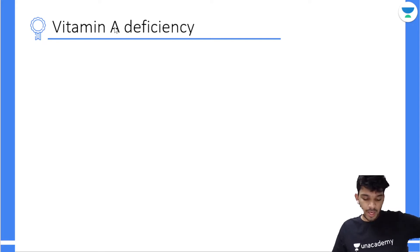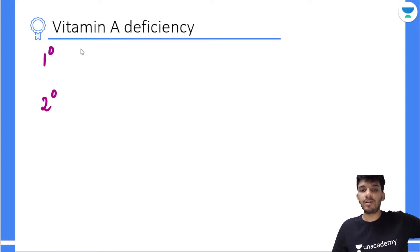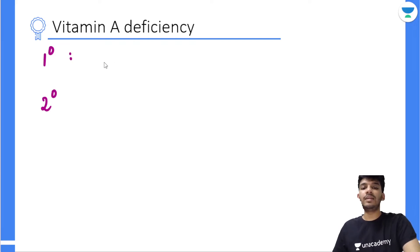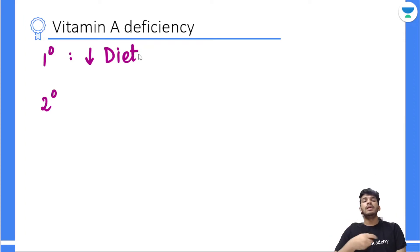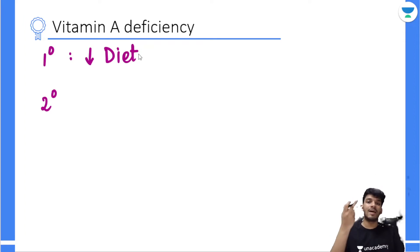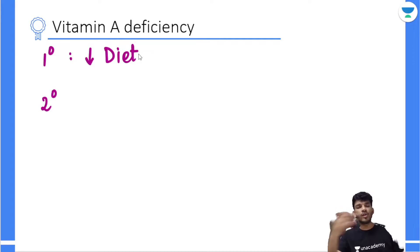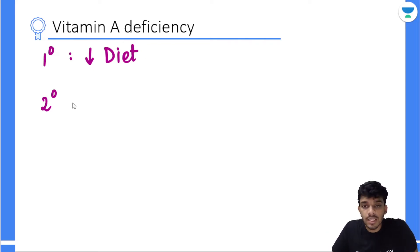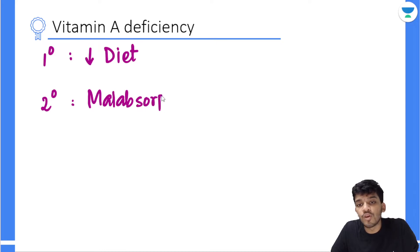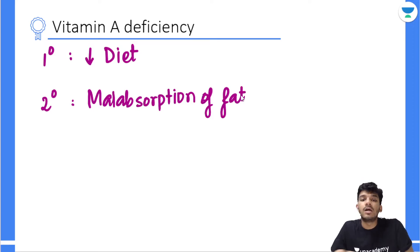Vitamin A deficiency can be primary or secondary. Primary vitamin A deficiency is when your diet does not have an adequate amount of Vitamin A — it can be a multi-vitamin deficiency in a person having severe acute malnutrition. Secondary deficiency is generally due to malabsorption of fat, where Vitamin A is not being absorbed and assimilated.